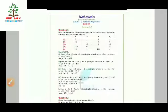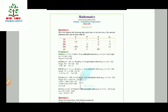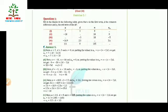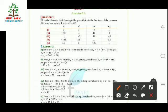Hello everyone. Today we are going to solve Exercise 5.2 of Chapter 5, Arithmetic Progression. The first question asks us to fill in the blanks in the following table, where a is the first term, d is the common difference, n is the number of terms, and aₙ is the nth term of an AP. In the first part, a, d, and n are all given; we have to find aₙ.